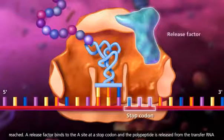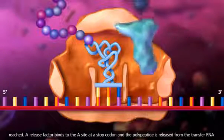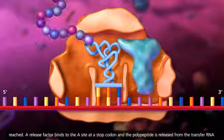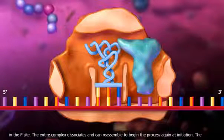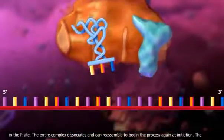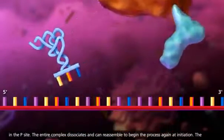A release factor binds to the A site at a stop codon and the polypeptide is released from the transfer RNA in the P site. The entire complex dissociates and can reassemble to begin the process again at initiation.